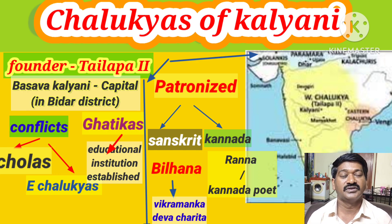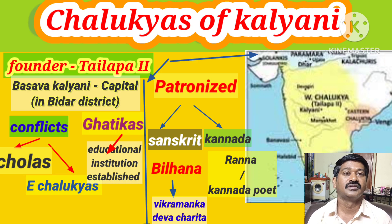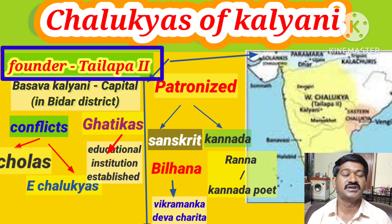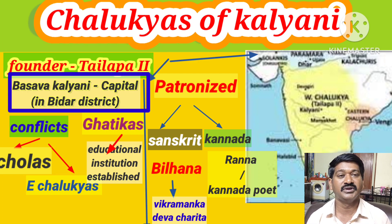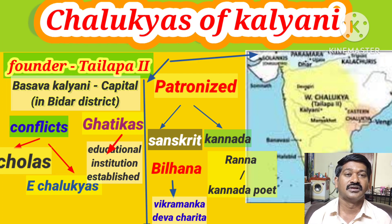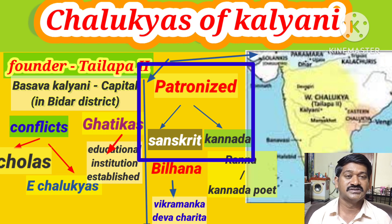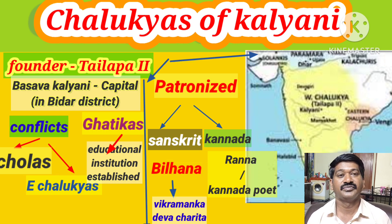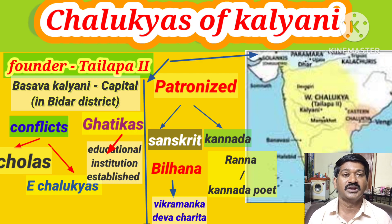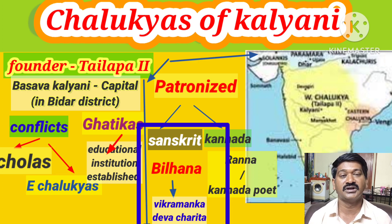Now we are going to discuss about the Chalikyas of Kalyani. The founder of the Chalikyas of Kalyani was Tailapa. His capital was Baswa Kalyani in Bidar district. The Chalikyas of Kalyani rulers patronized Sanskrit and Kannada languages. In Sanskrit, Bilhana was the famous poet who wrote the Vikramanka Devacharitra.